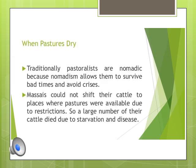How were the Maasai suffering? Traditionally, during the dry season they used to move to regions with green grasses to feed their cattle — from arid regions to moisture-rich areas. But now the Maasai could not shift their cattle to places where pastures were available due to restrictions. As a result, large numbers of their cattle died due to starvation and disease.